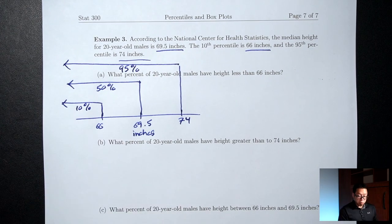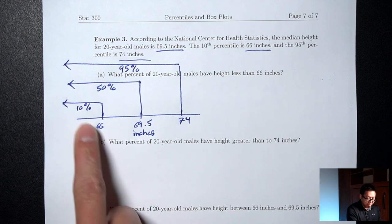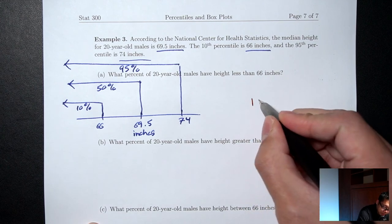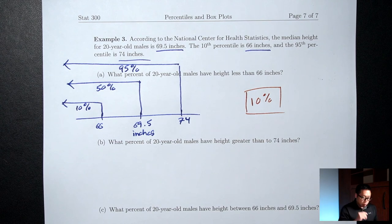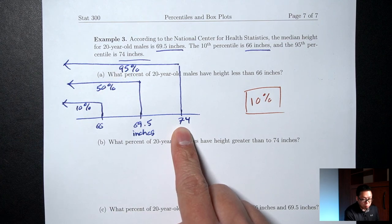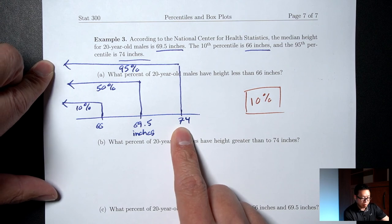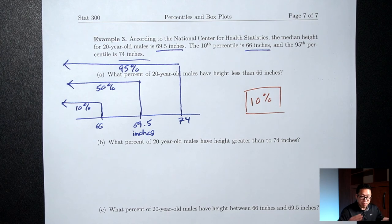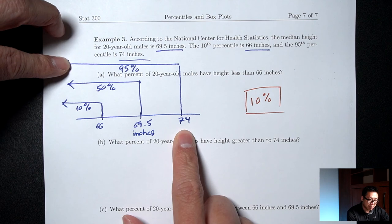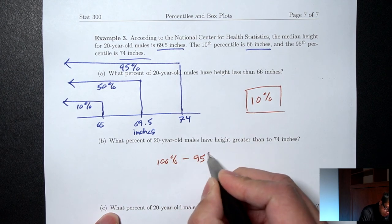Part A: what percent of 20-year-old males have height less than 66 inches? 66 is at the 10th percentile, and to the left is 10%. Part B: what percent have height greater than 74? We know 95% is to the left of 74, so the percent to the right is 100% minus 95%, which equals 5%.